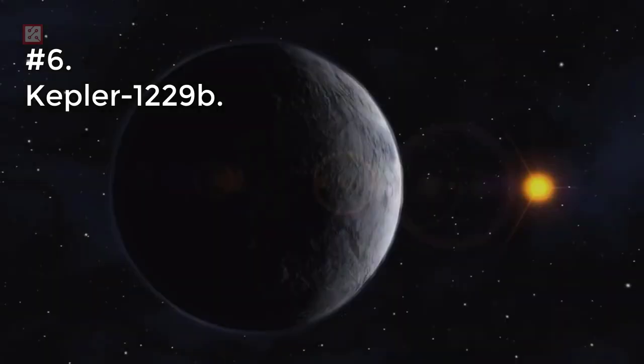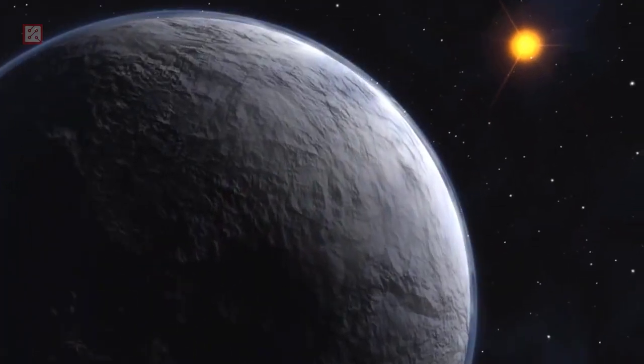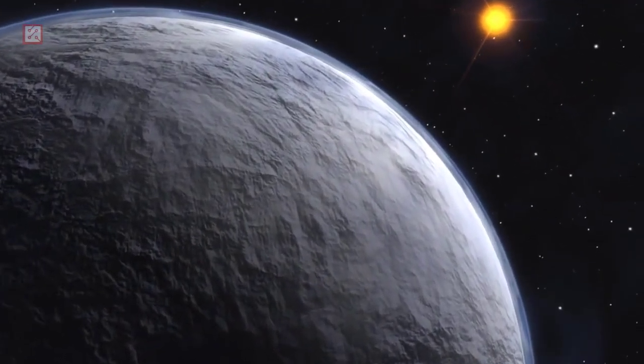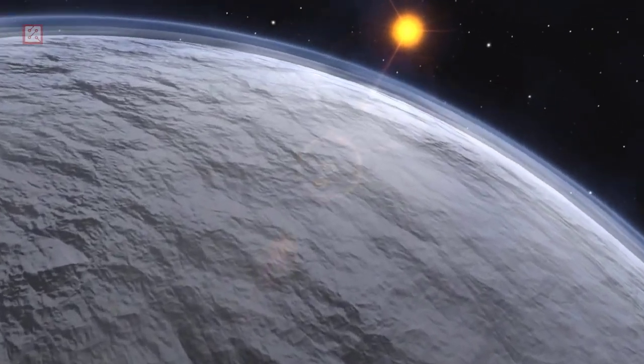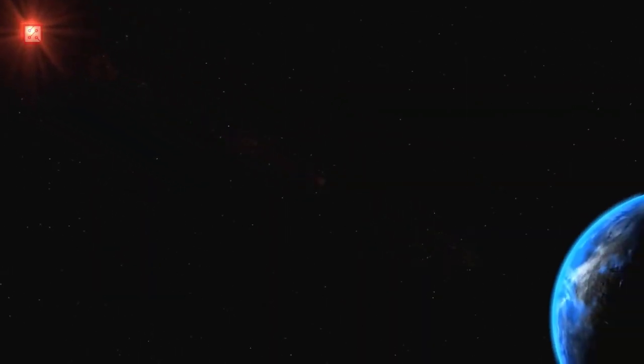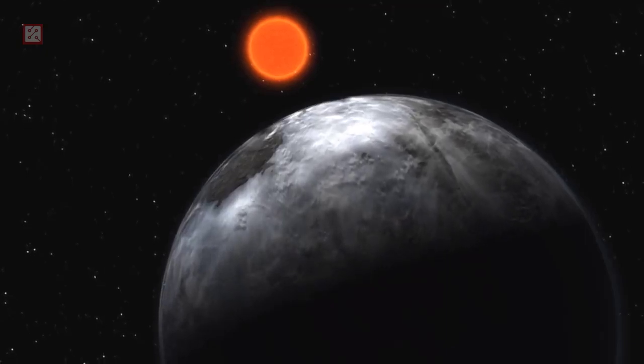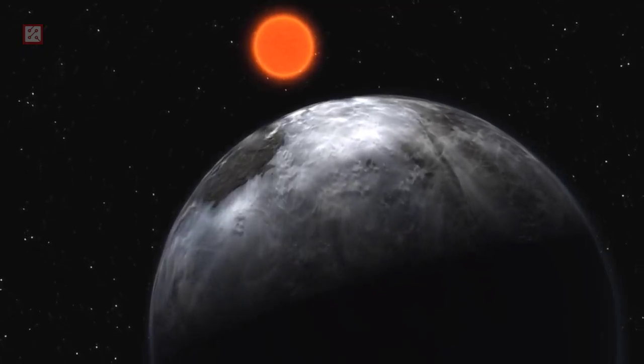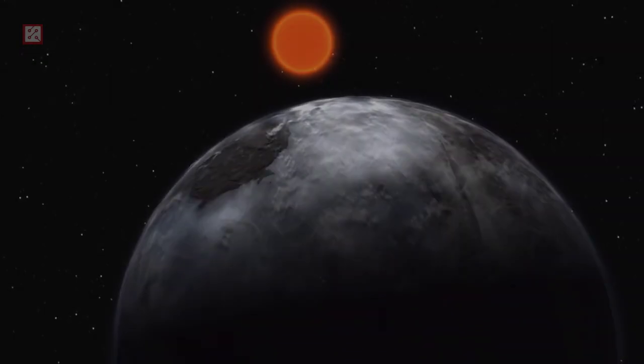Number 6: Kepler-1229b. Kepler-1229b is a confirmed super-Earth exoplanet, likely rocky, orbiting within the habitable zone of the red dwarf star Kepler-1229, located about 870 light-years from Earth in the constellation of Cygnus. This super-Earth orbits its host star with about 4% of the Sun's luminosity every 86.83 days at a distance of 0.29 AU. The planet is likely tidally locked, where the temperatures may be suitable along the terminator line for liquid water to exist.